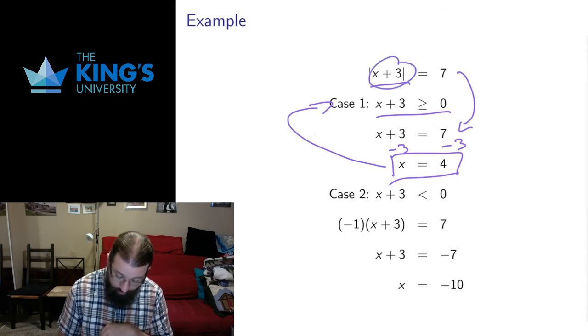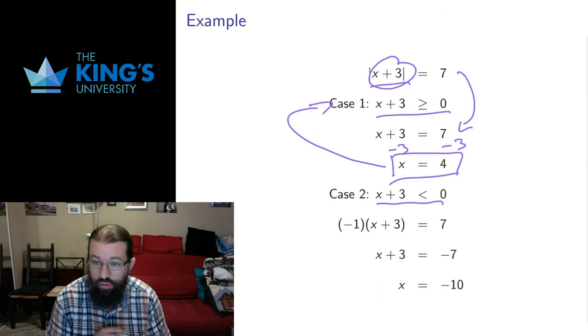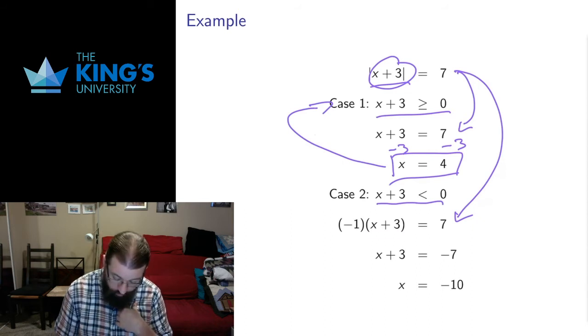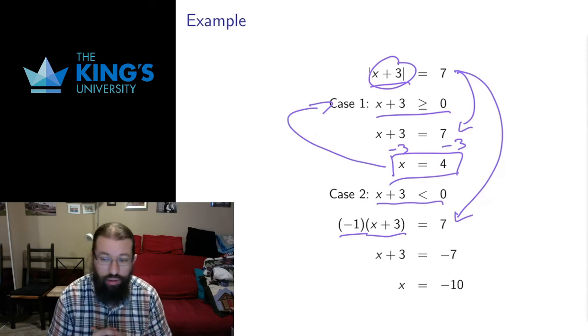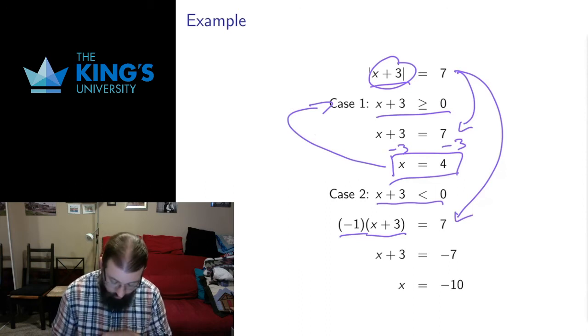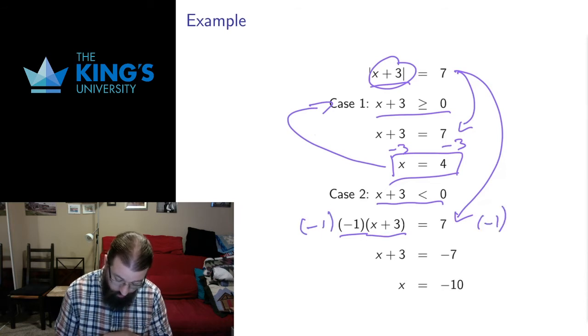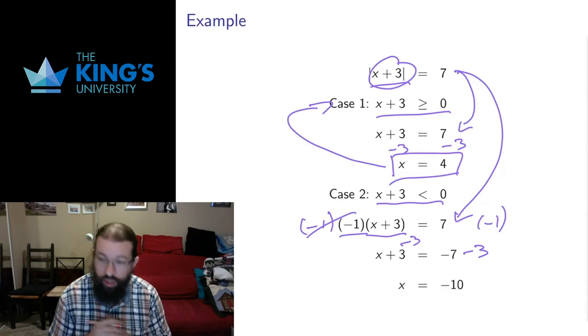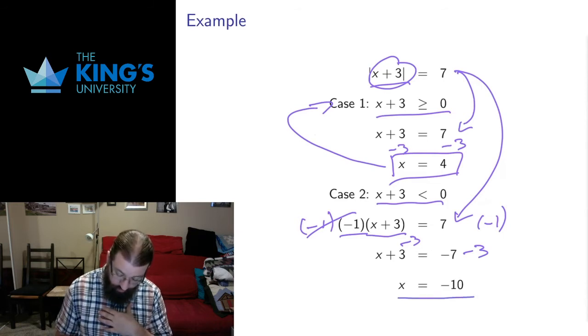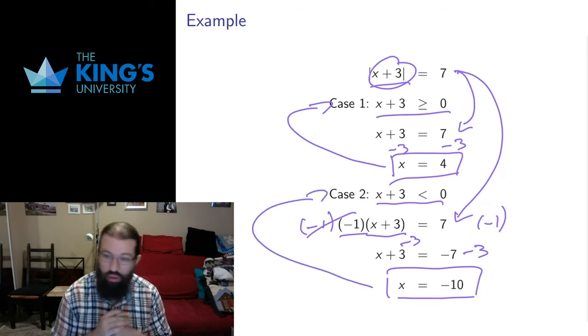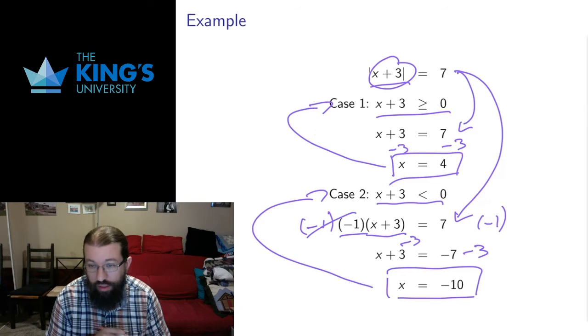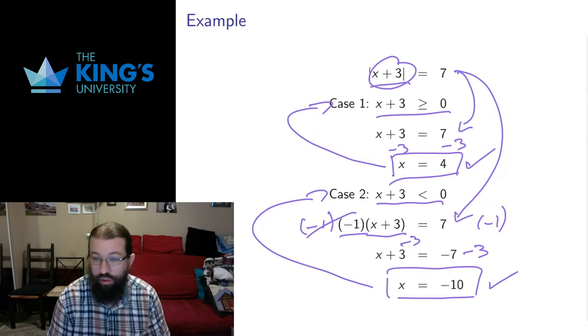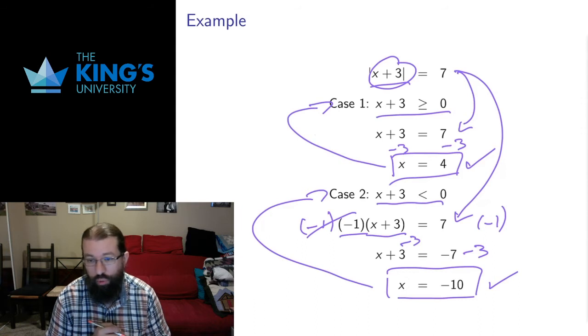For case 2, I'm going to take the thing inside the absolute value again and assume that it is negative. Then to go from the original expression to the case 2 expression, instead of the absolute value, I multiply the thing that was in the absolute value by negative 1. That's how I make negative things positive. Then I solve. So I can multiply both sides by negative 1. The negative 1's cancel, I get negative 7 on the right. I subtract 3 from both sides, 3's cancel on the left, I get x equals negative 10. That's another solution. I check that that solution fits case 2. Negative 10 plus 3 is negative 7. That is a number that is less than 0, so it's valid. This is a valid solution for case 1, this is a valid solution for case 2. There are two numbers where the absolute value of x plus 3 equals 7: 4 and negative 10.